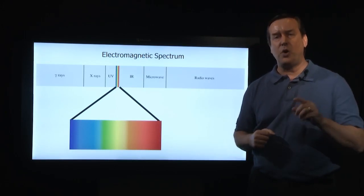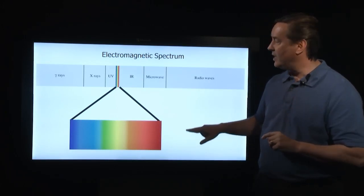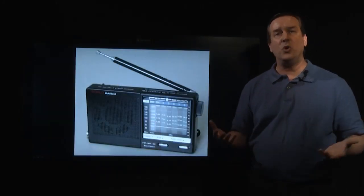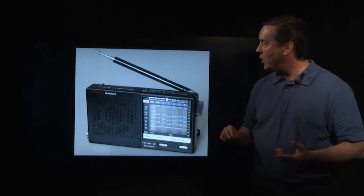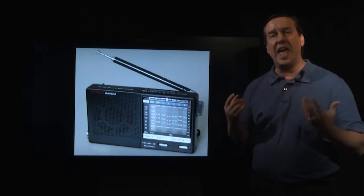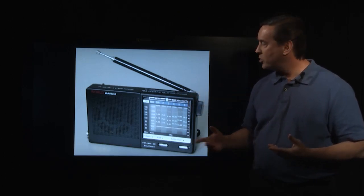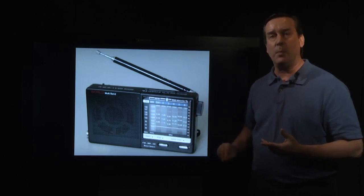In your everyday life, you're probably familiar with many of these types of light. The most common are radio waves. This multiband radio receiver includes not only FM and AM bands, but also several of the short wave radio bands.